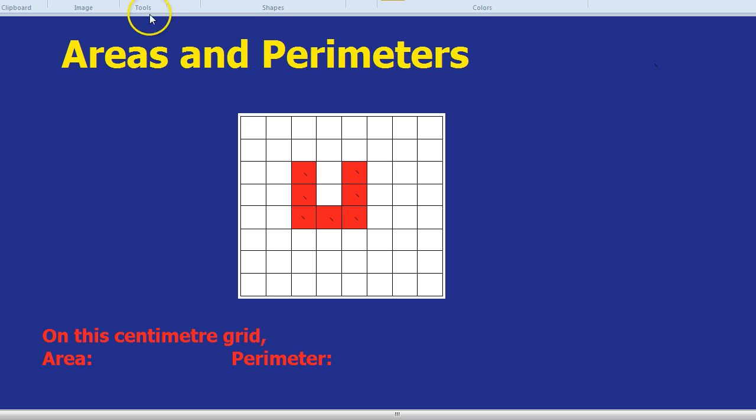So the area of this shape would be 7 centimetres squared. The area is 7 centimetres squared. Area would always be squared on the end in the units.